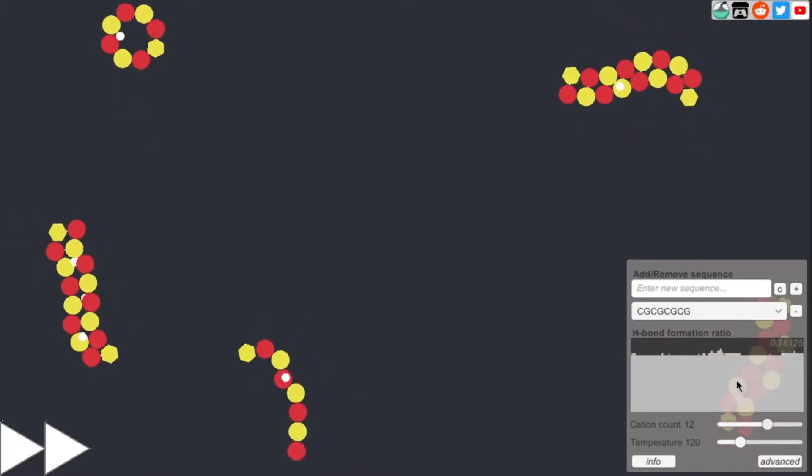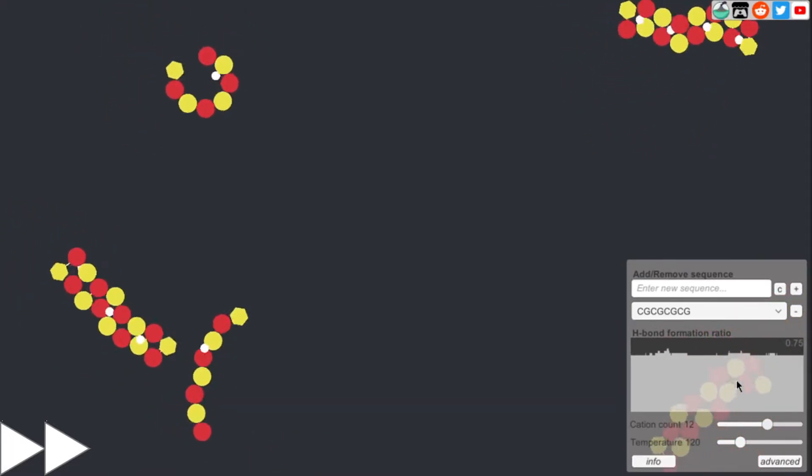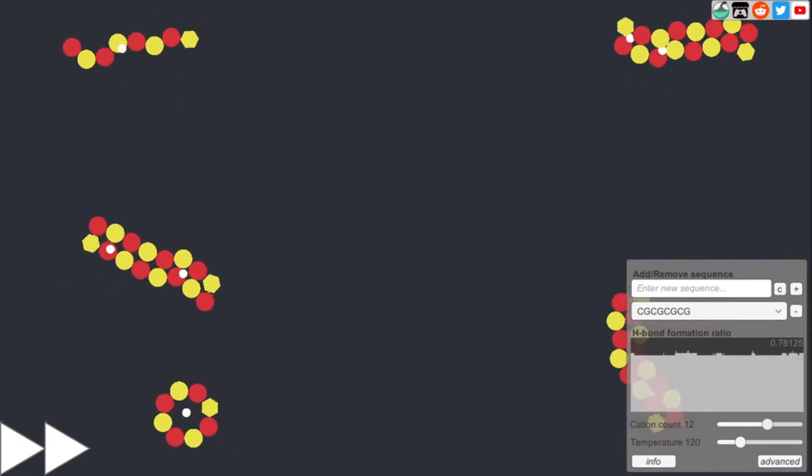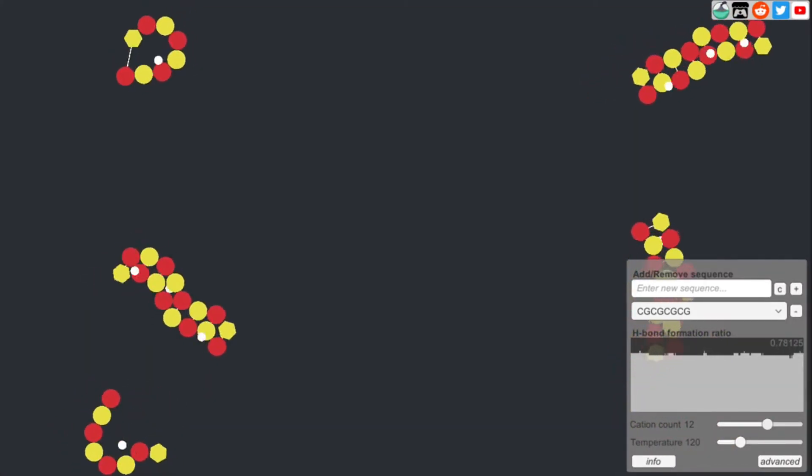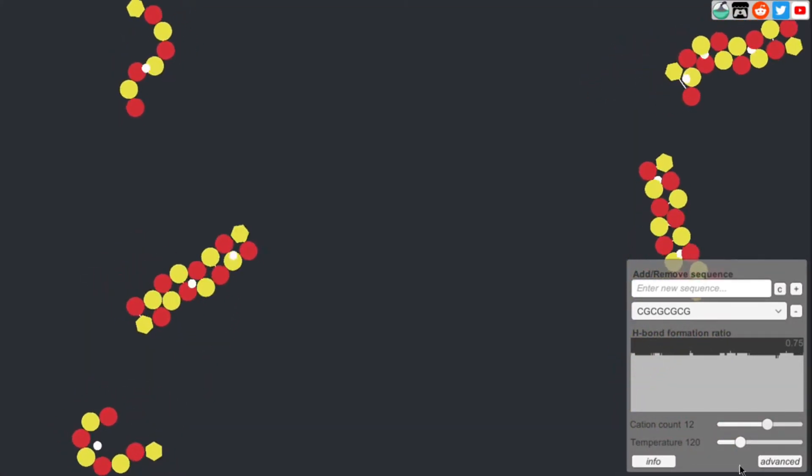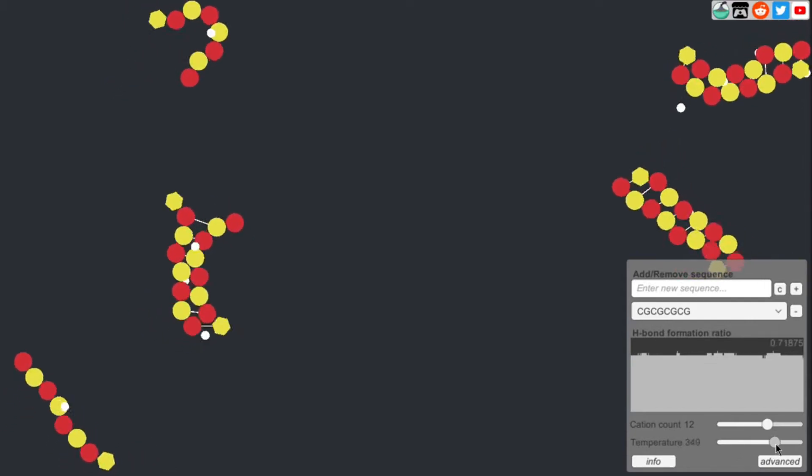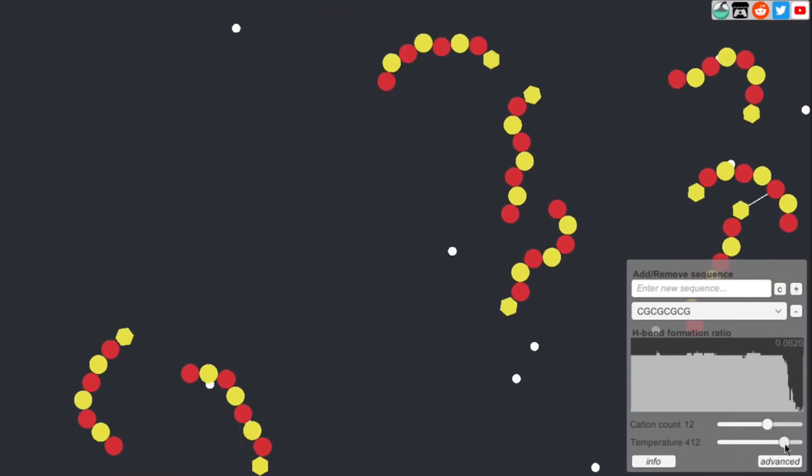The second parameter I will show is the temperature. It is expected that with increasing temperature, the double-stranded DNA will separate. Now I will increase it from 120 to about 400. The hydrogen bond formation ratio drops.